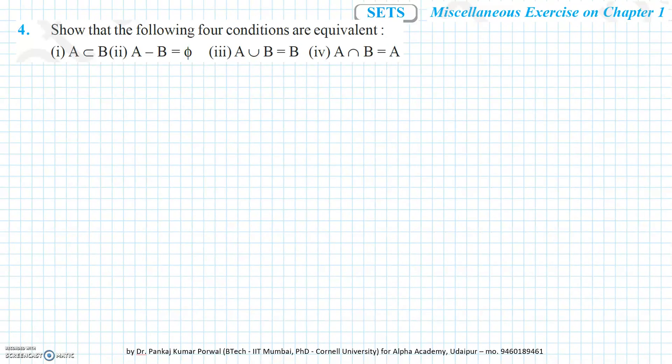In this question we have to prove that the four conditions are equivalent: A is a subset of B; A minus B is the empty set; A union B is equal to B; and A intersection B is equal to A.